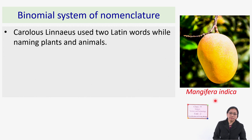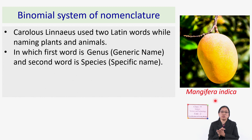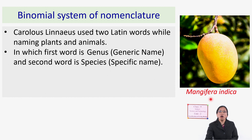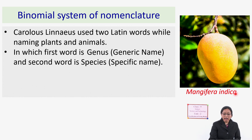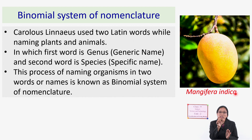In the two names, the first name is the genus — also known as the generic name — and the second name is the species — also known as the specific name. For mango, Mangifera is the genus and indica is the species. Naming an organism using genus and species is called the binomial system of nomenclature.